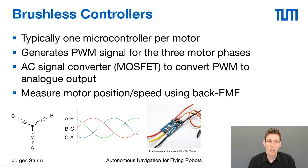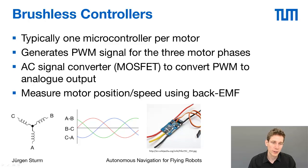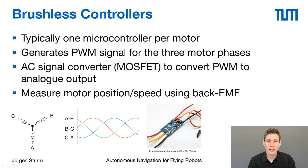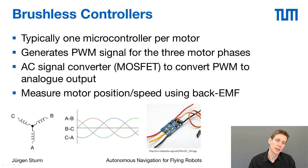You can buy such motor controllers very cheaply. In this picture in the middle you can see such a controller — it's very small. It gets power from the battery via two thick red and black cables, outputs the three motor phases on the left, and has a small thin cable that goes to the autopilot board of the quadrotor.